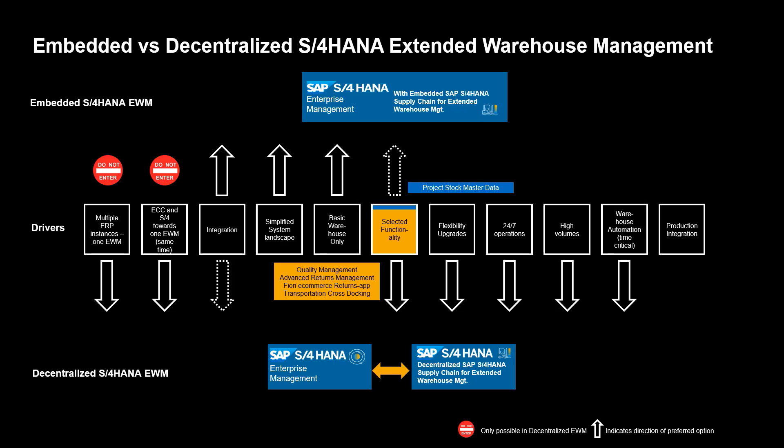Finally, driver number eleven. If you plan to use EWM in supporting a production warehouse, embedded deployment may be the best choice. This is driven both by some detailed functional requirements as well as the obvious benefits of having very tight integration with production planning in S4HANA.